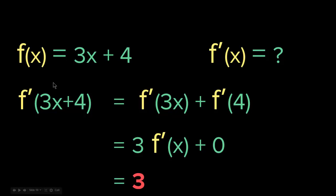So as you can see, f(x) = 3x + 4. According to the rule, we took the derivative of each — the derivative of 3x and the derivative of 4 — summed them together, and got 3. This is basically the sum rule or the difference rule for derivatives.